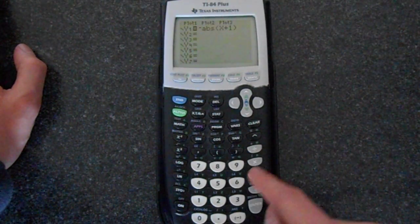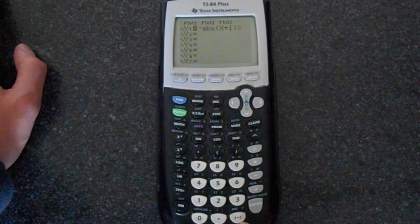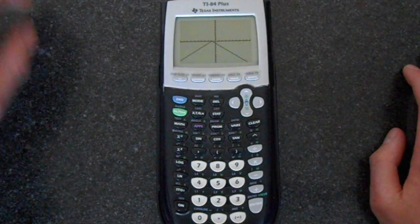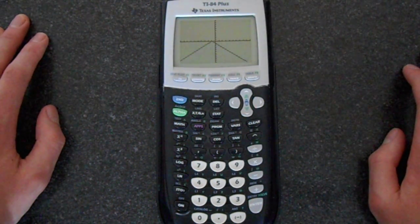And notice, don't use the negative here, use this negative. And then graph that and you get the reflection of what we had before, which is exactly what you would expect.